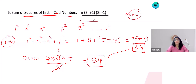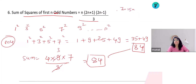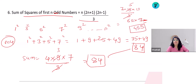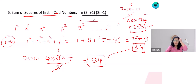For first 7 odd numbers, substitute n=7: 7 × 15 × 13 / 3 = 455. Instead of manually adding 1² + 3² + 5² + 7² + 9² + 11² + 13², you can substitute into the formula and find the answer easily.